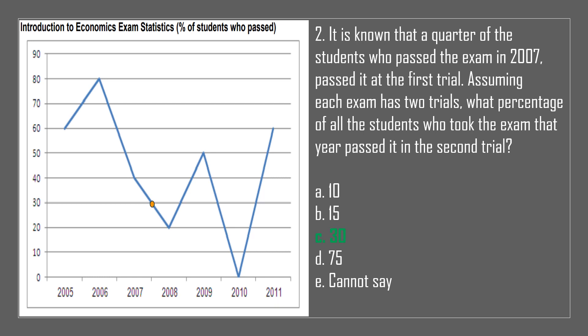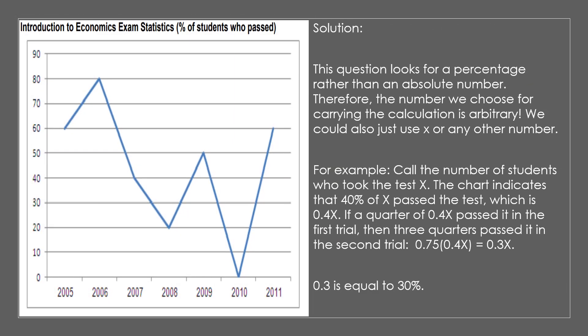The answer is C, 30. Solution: This question looks for a percentage rather than an absolute number. Therefore, the number we choose for carrying the calculation is arbitrary — we could also just use X or any other number. For example, call the number of students who took the test X. The chart indicates that 40% of X passed the test, which is 0.4X.